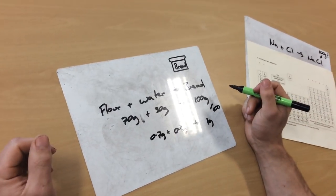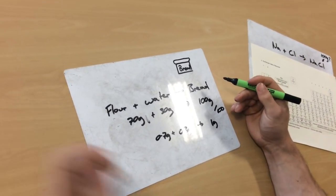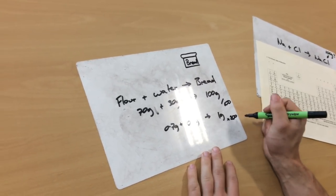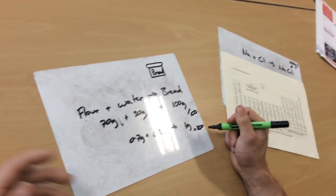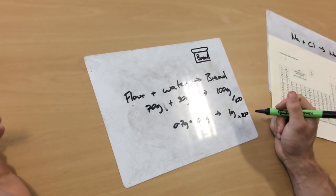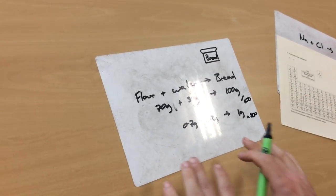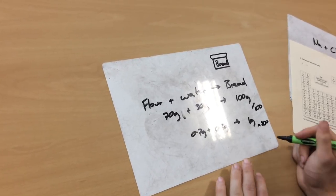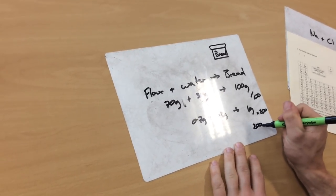But I want 200 grams of bread. So how do I work that out? So all I do is I times this by what I want, which is 200. If I wanted 300 grams of bread, I times it by 300. I wanted 400 grams of bread times by 400. But now I've got the basic to work out for any amount of bread. So if I times this by 200, I get 200 grams of bread.